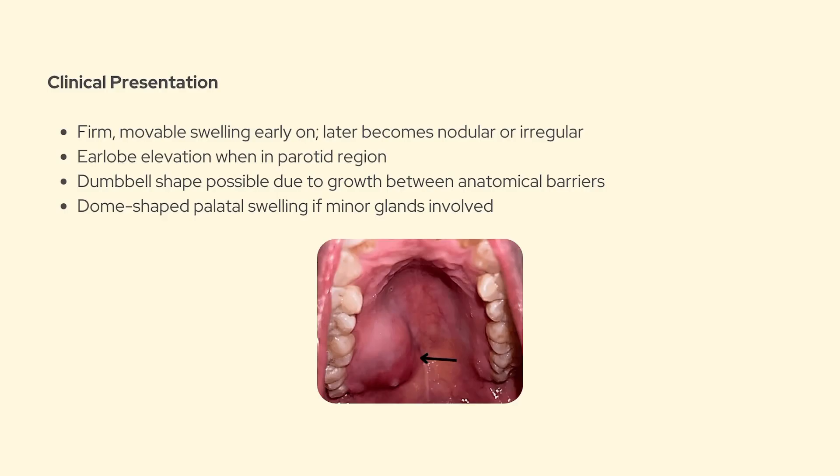In terms of presentation, these tumors are typically slow growing and painless. In early stages, the swelling is firm but still movable. Over time, it can become nodular and a little irregular to the touch. Some lesions grow medially between anatomical structures such as the ramus and the stylomandibular ligament, and that leads to what's called a characteristic dumbbell shape.